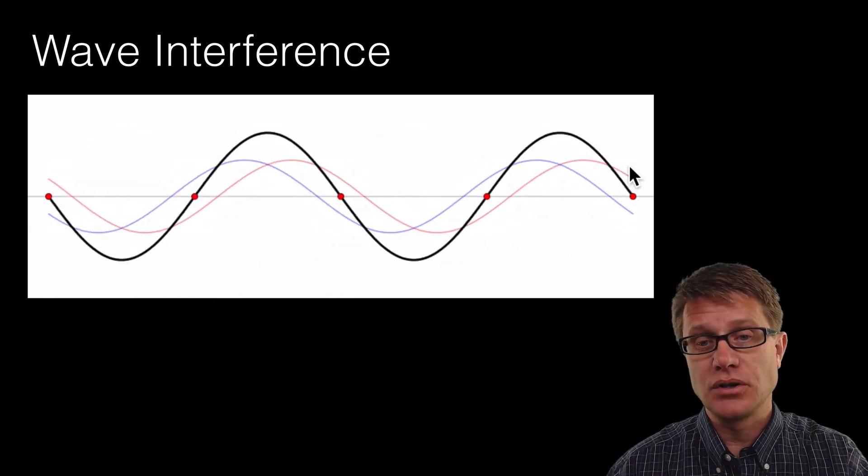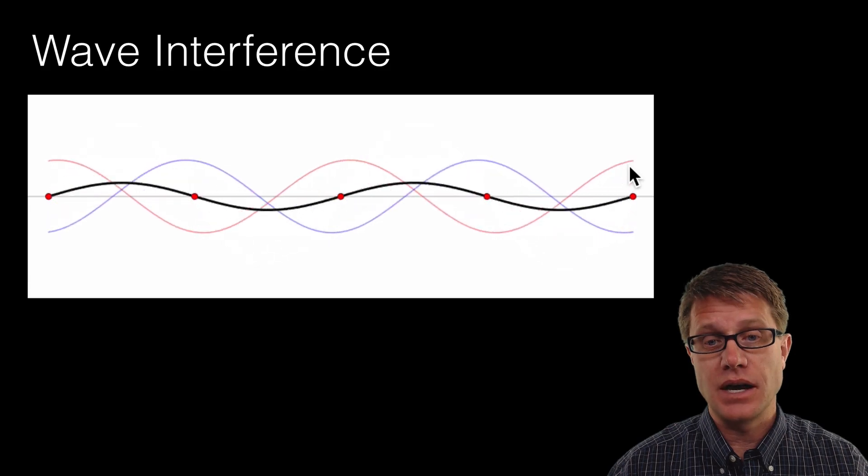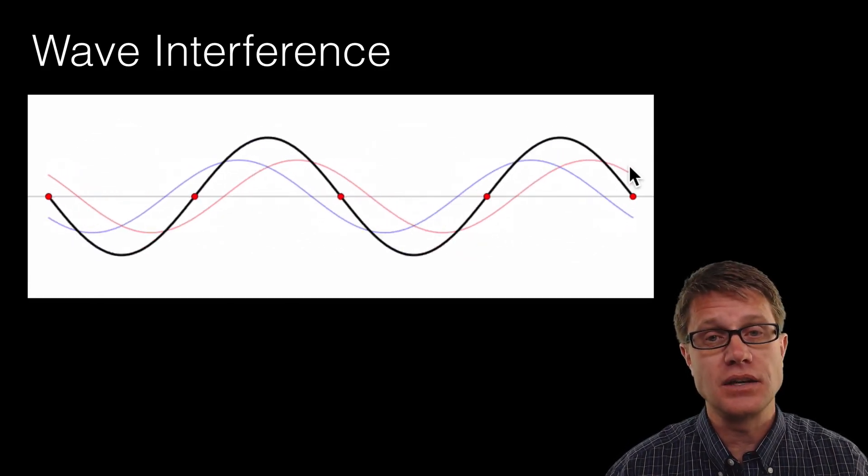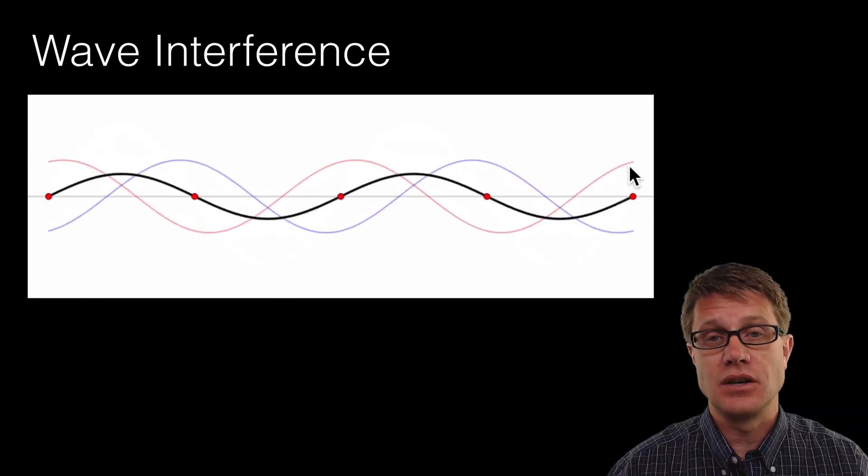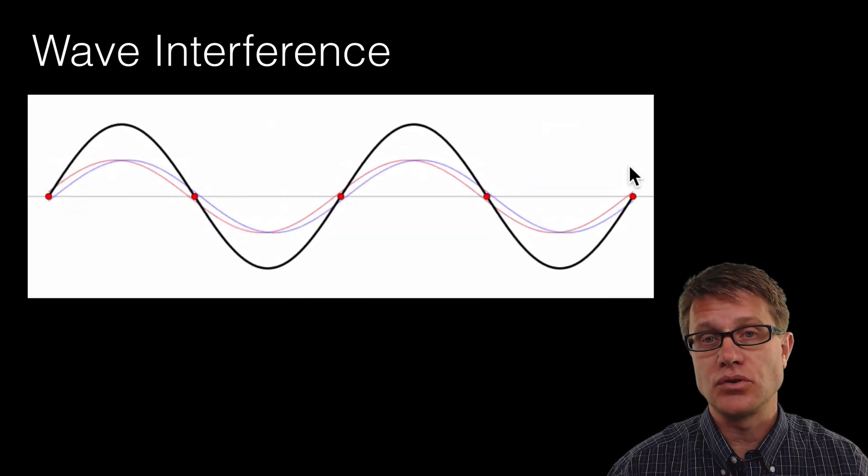And so we have the blue going to the right, we have the red going to the left. And what is that dark band or that standing wave? It is the summation. It is the superposition of both of those waves together.